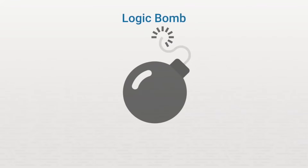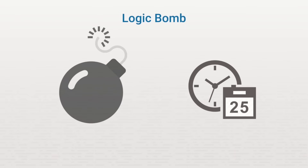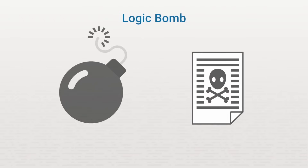Let's talk about another type of malware called a logic bomb. A logic bomb is malicious code that's designed to execute only after certain predefined conditions are met. The malware lays dormant until these conditions occur, then it executes. For example, it's common for a logic bomb to wait until a certain date and time is reached before it executes. Other logic bombs may wait until the user opens a specific application or file. Logic bomb effects can range from benign to malicious in nature.